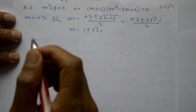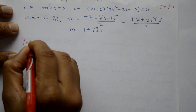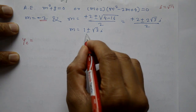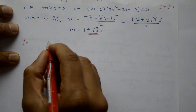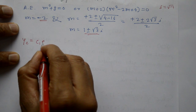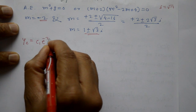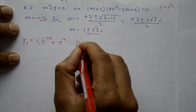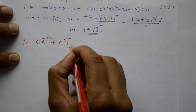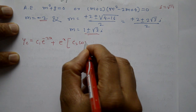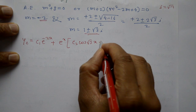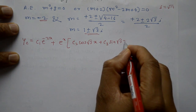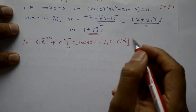The complementary function is yc = c₁e^(−2x) + e^x(c₂cos(√3·x) + c₃sin(√3·x)).